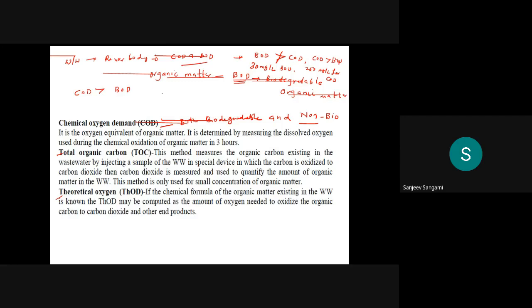The BOD to COD ratio always varies from 0.5 to 0.9. This depends on the kind of characteristics of the wastewater being released from the industries.